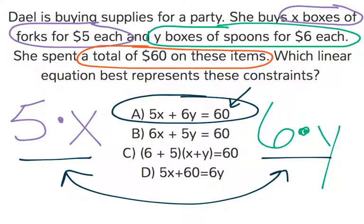B, 6X plus 5Y. Those got mixed up. It's 5X and 6Y, not 6X and 5Y.